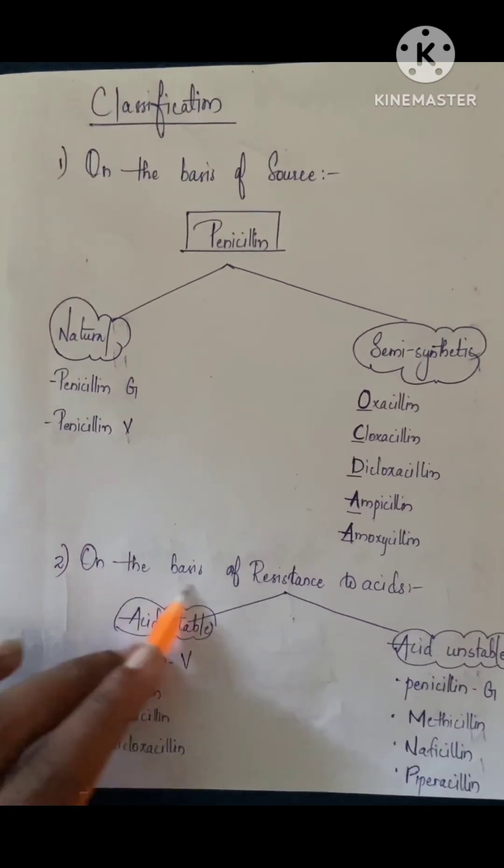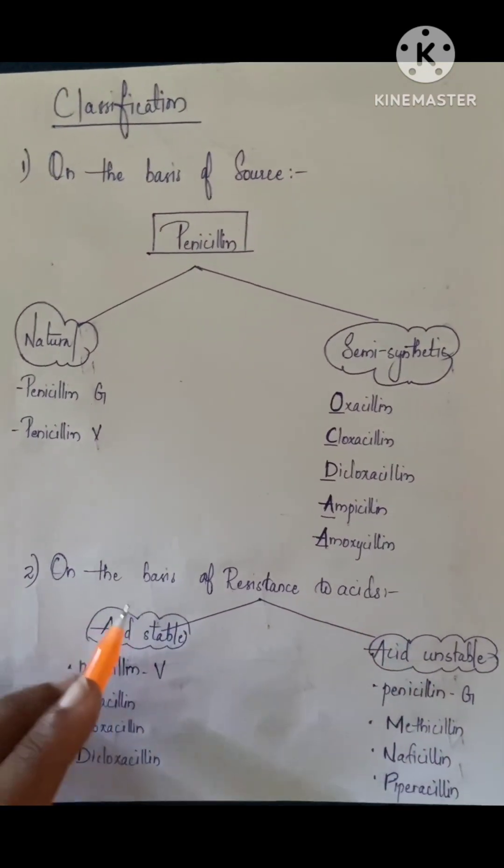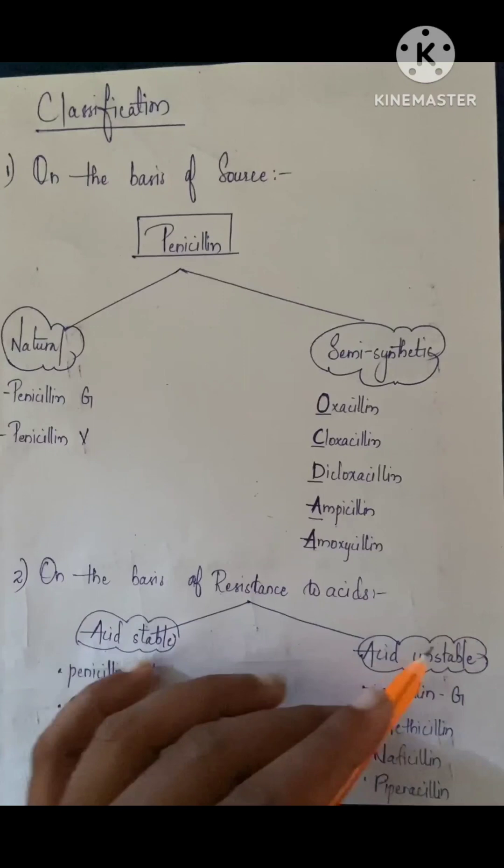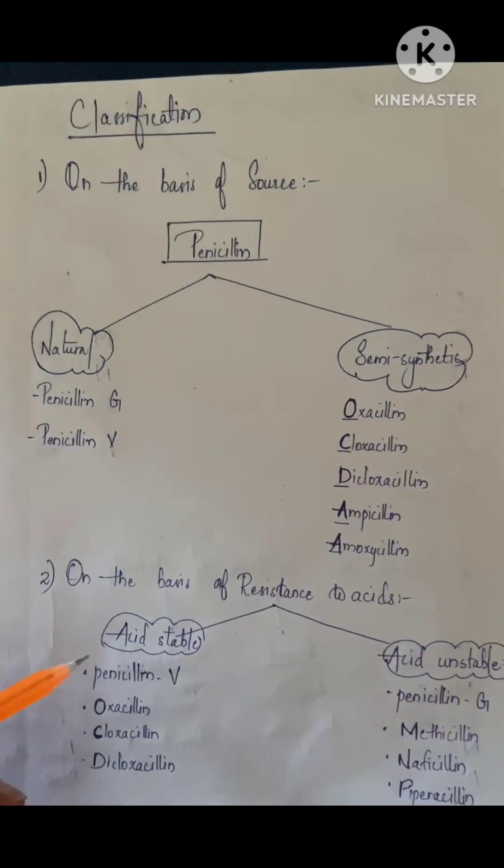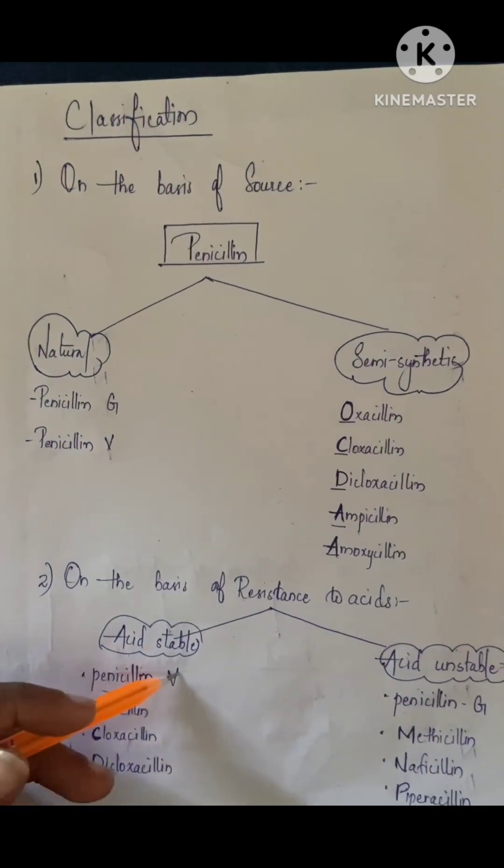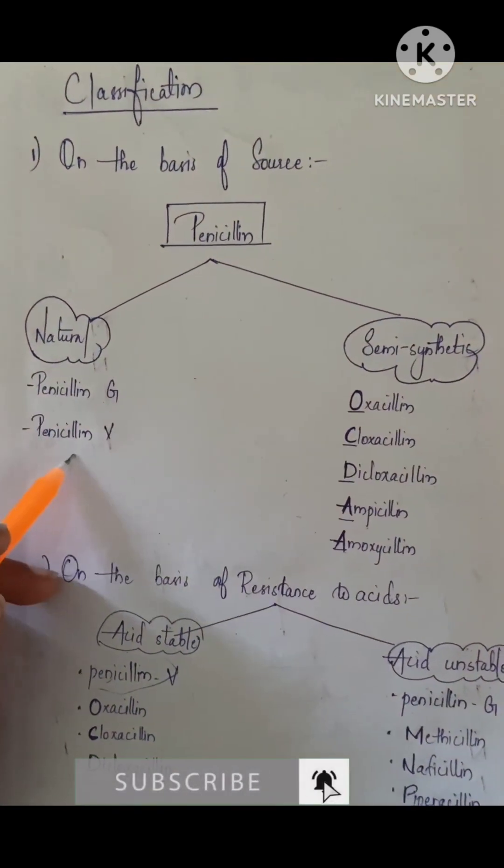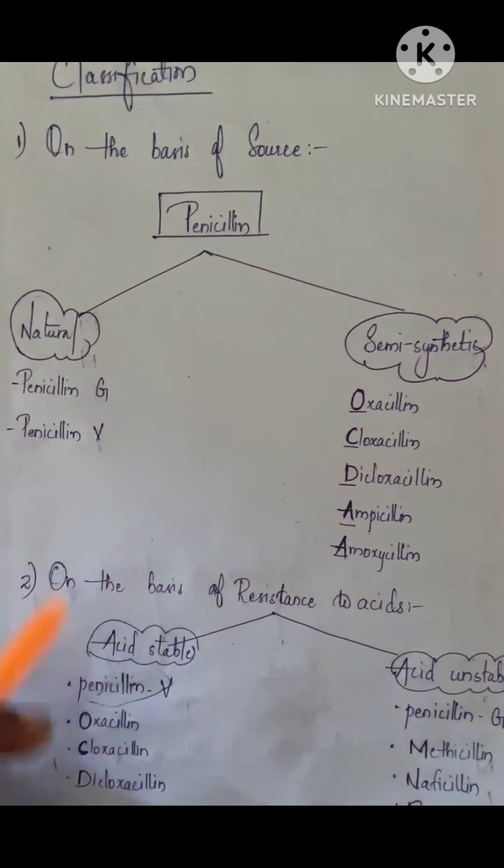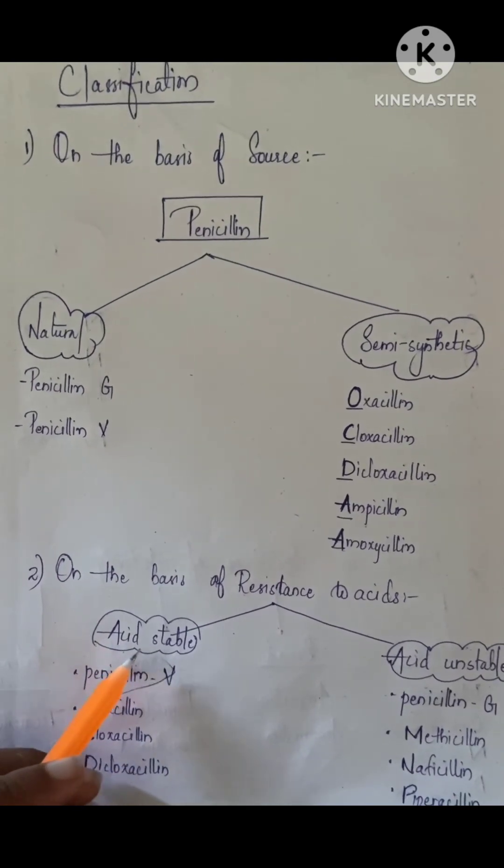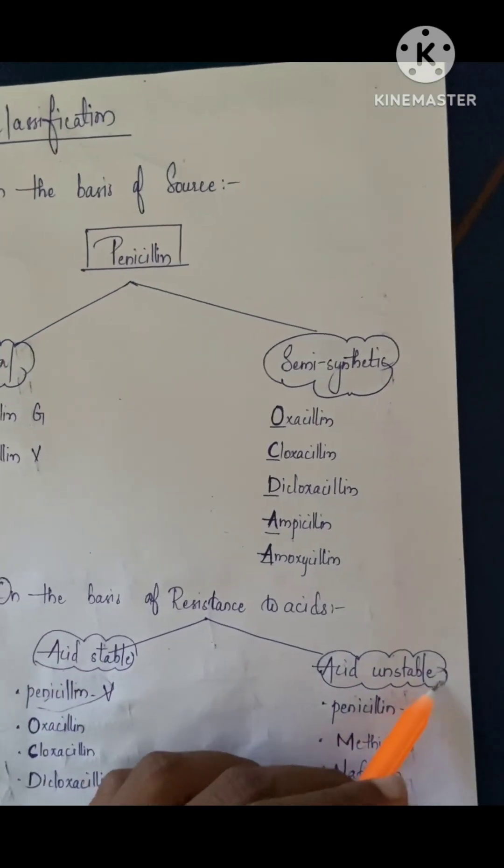Next is on the basis of resistance to acid: acid stable penicillins and acid unstable. Penicillin V is acid stable, while penicillin G is acid unstable. Acid stable also includes oxacillin, cloxacillin, and dicloxacillin.